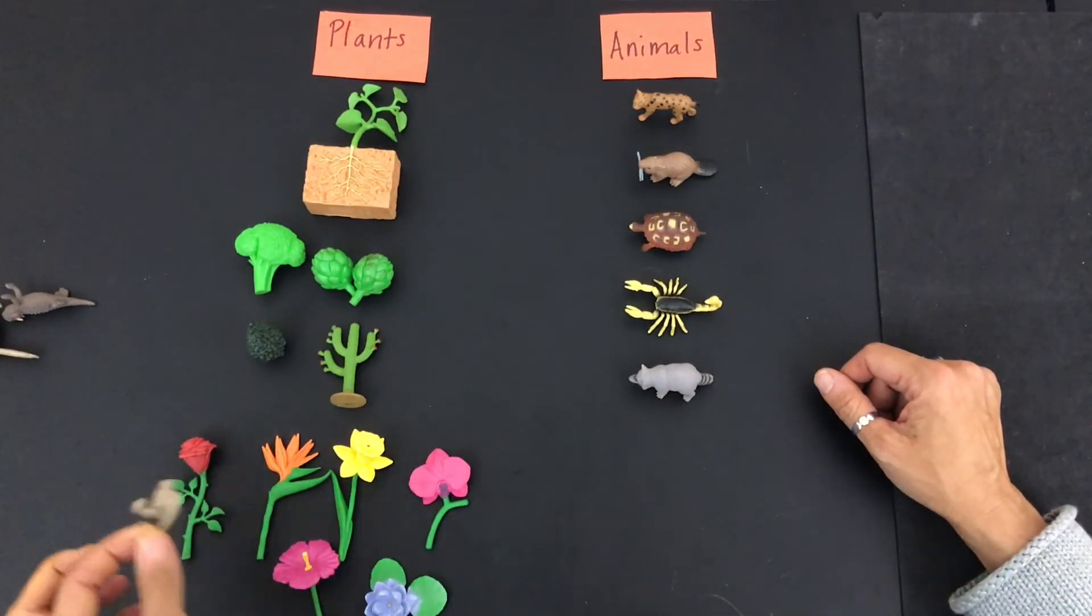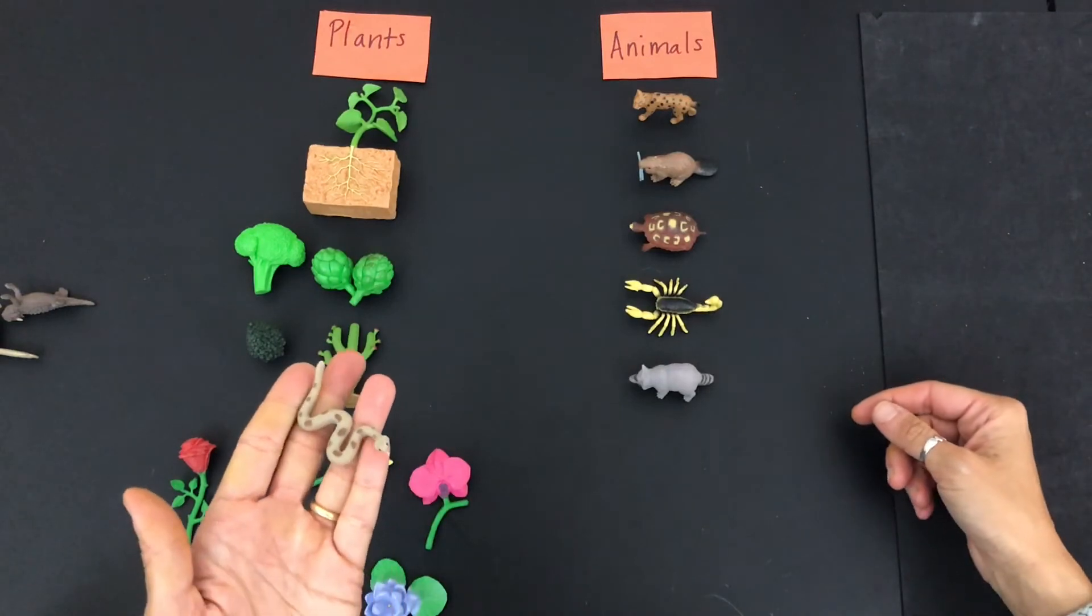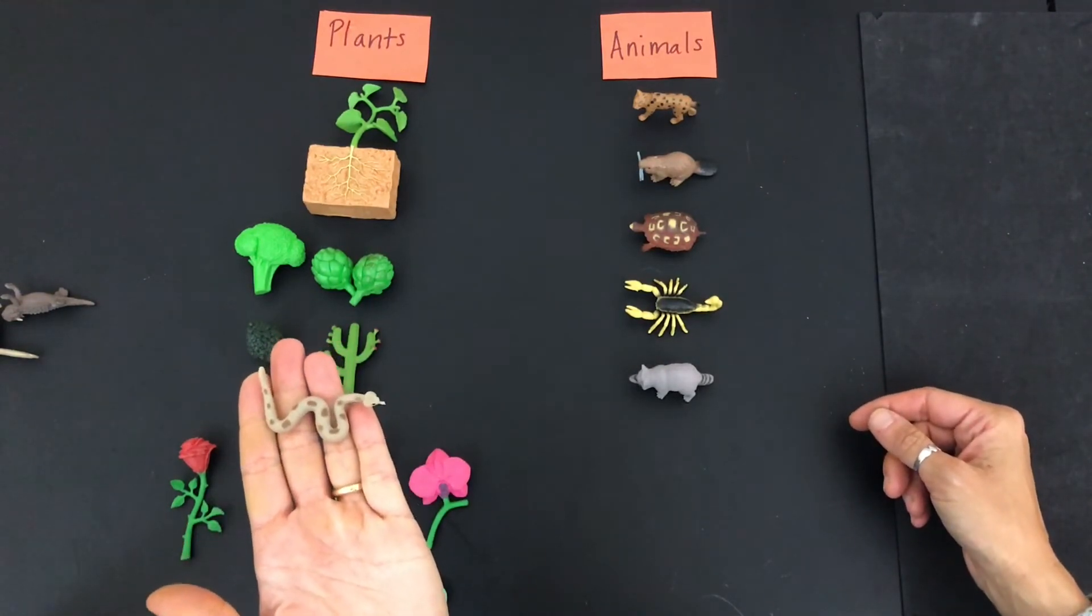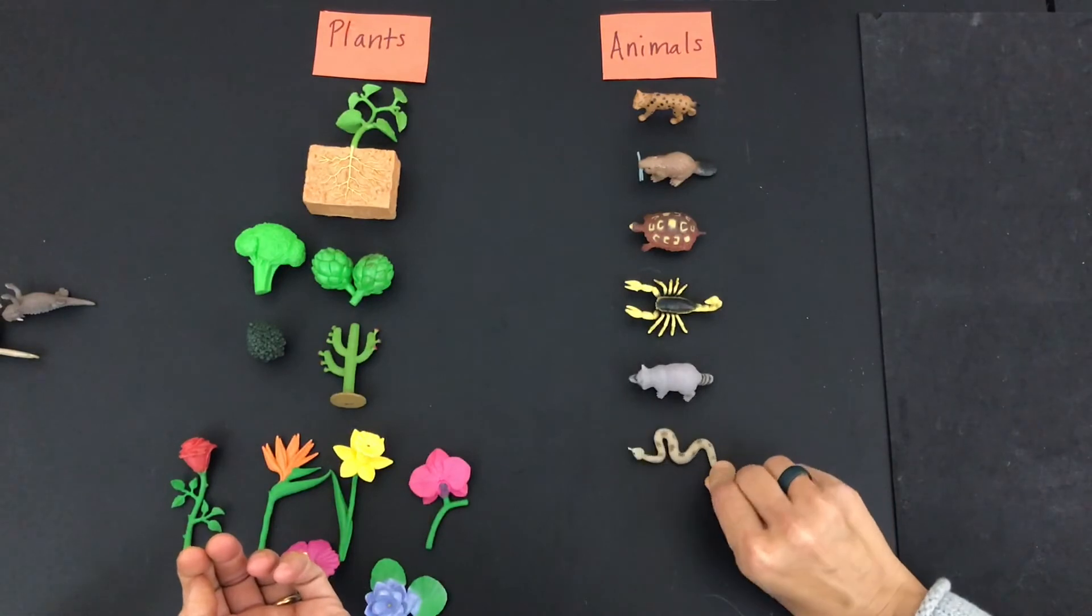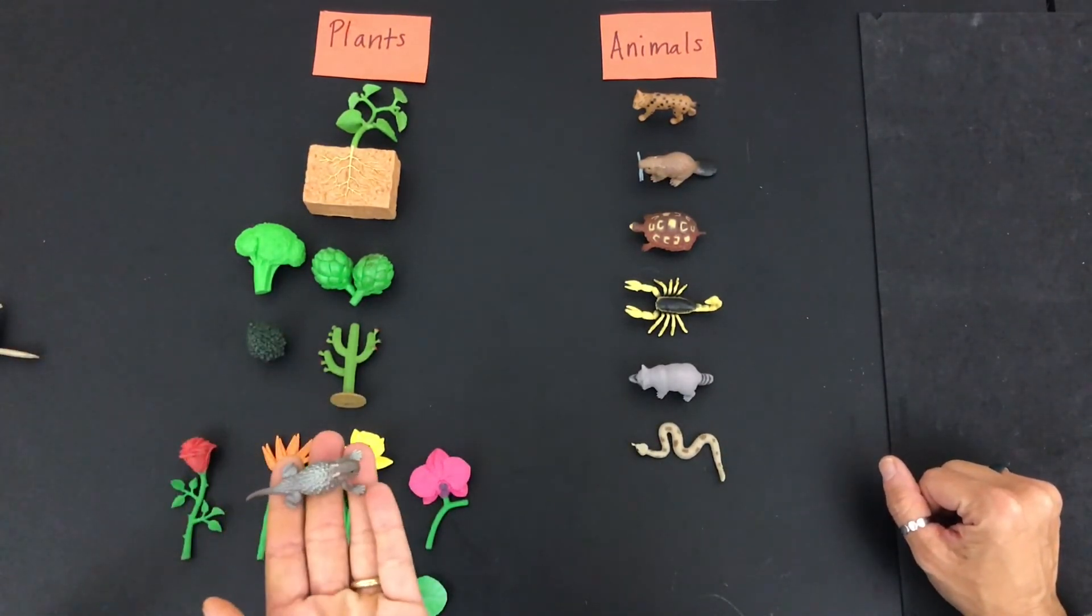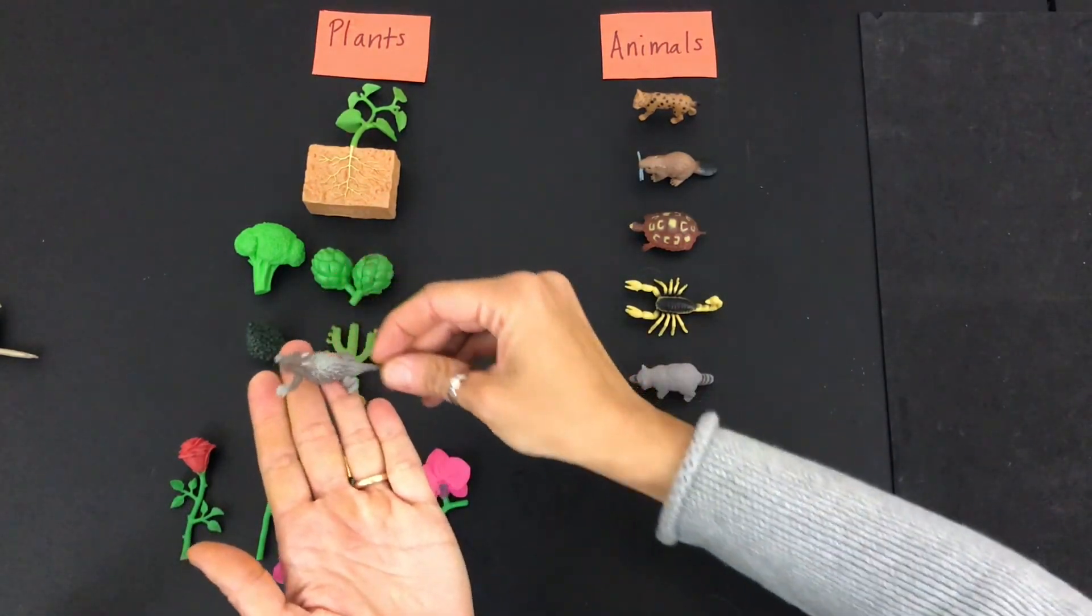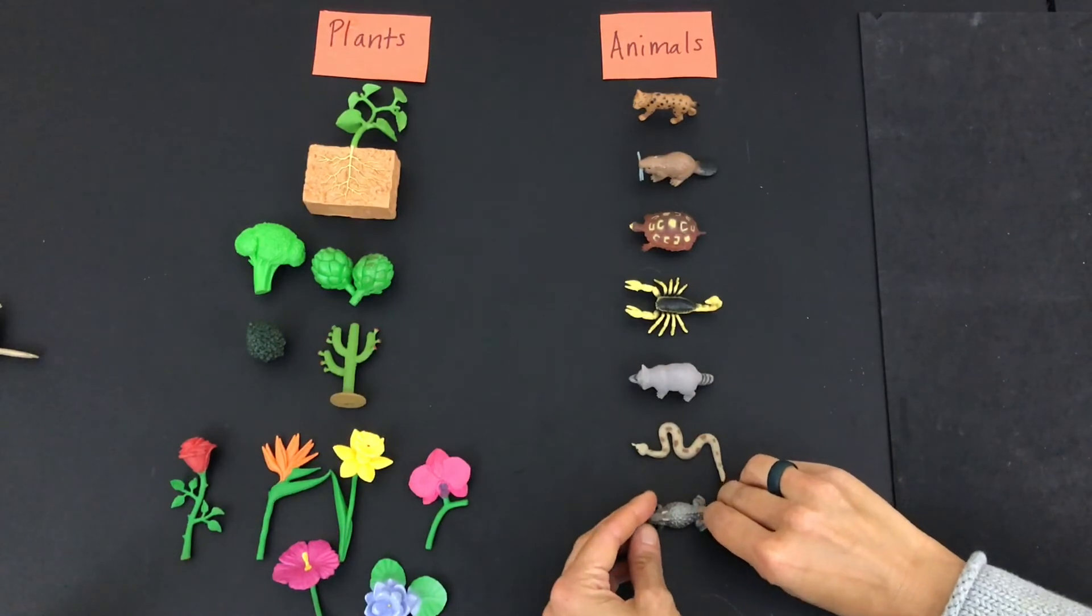Ooh, how about this? Reptile. Yes, a snake. Definitely an animal. And so we have another reptile here, right? Yeah, that's a lizard. That's also an animal. It's a reptile.